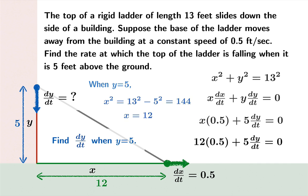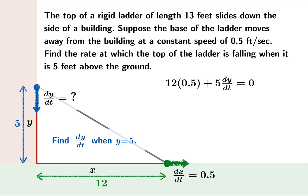So from here, it's a matter of simple arithmetic. And we discover that dy/dt is negative 6 fifths feet per second or negative 1.2 feet per second.